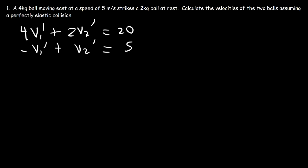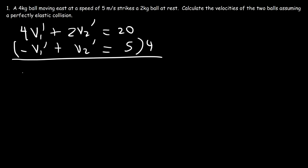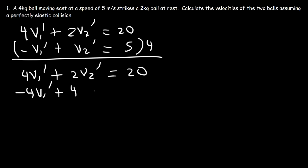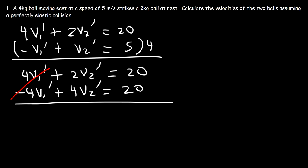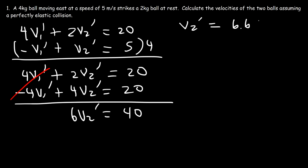Now we have an algebra problem — we need to solve this system of equations using elimination. We have positive 4v1', so we need negative 4v1' to cancel it out. Multiply the second equation by 4, giving: -4v1' + 4v2' = 20. Adding both equations: 4 and -4 cancel to zero, 2 + 4 = 6, and 20 + 20 = 40. Dividing 40 by 6 gives v2' = 6.67 meters per second. Because it's positive, the second ball is moving to the right.